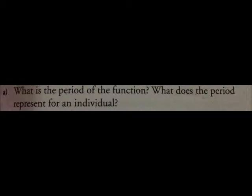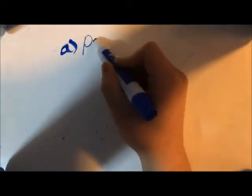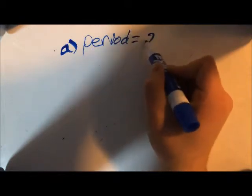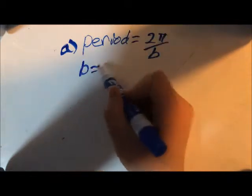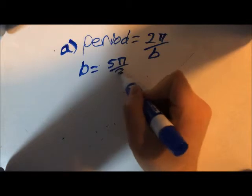Part a of the question asks: what is the period of the function? What does the period represent for an individual? To find the period of a trigonometric function, we must divide 2 pi by the b value. In this case, the b value is 5 pi over 3.